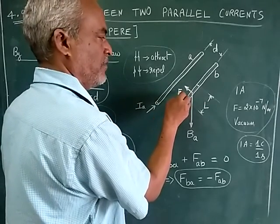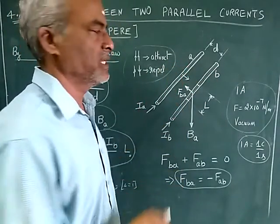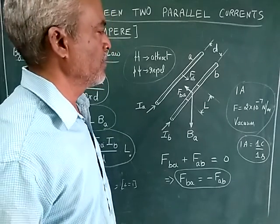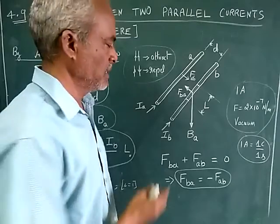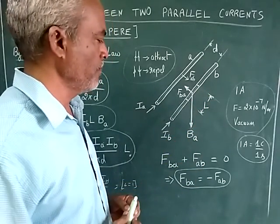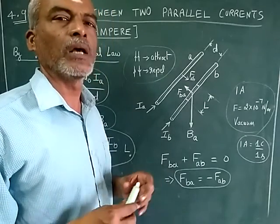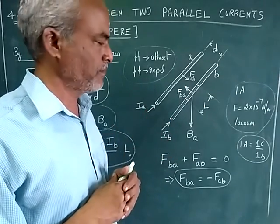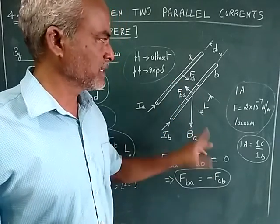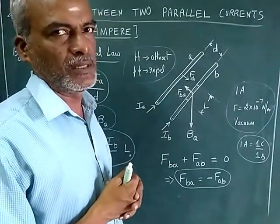The force from B to A is represented as FBA. Similarly, the force from A to B is FAB, directed towards conductor B. FBA and FAB are equal in magnitude but opposite in direction, so if you add both forces you get zero. That means FBA equals negative FAB — the minus sign indicates they are opposing each other.